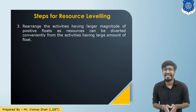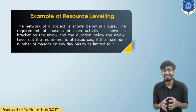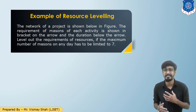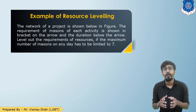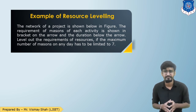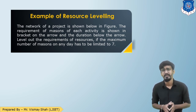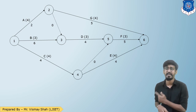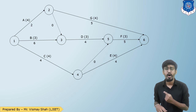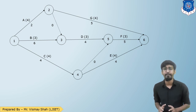Now let us see the example for resource leveling. A network is given in the diagram. In the brackets above the arrow, the mason (resource) requirement has been displayed, and below the arrow the duration has been displayed. We need to level out the resources if the maximum number of masons per day is limited to 7. Here is the network diagram, where above each arrow is the mason requirement and below each arrow is the activity duration.